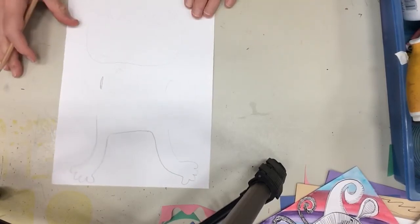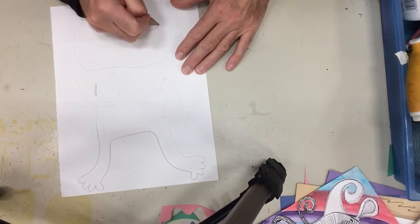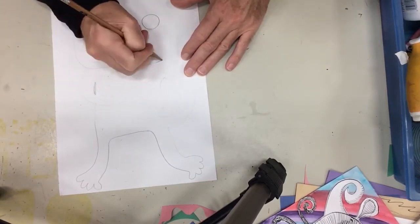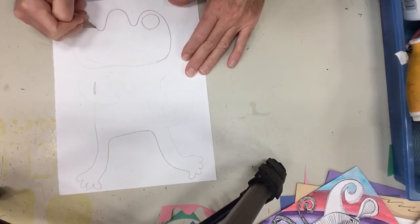There's my rough idea of what I want it to look like. And I can just keep adding on to it. So I'll go back in and harden my lines. Or darken them.